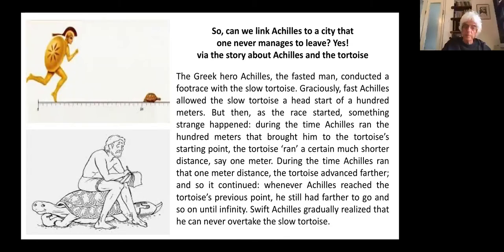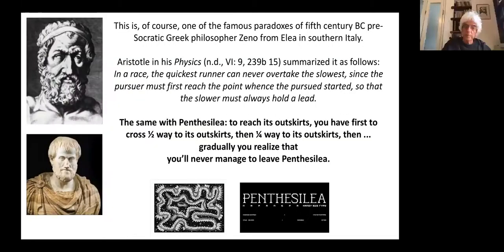This is, of course, one of the paradoxes of the Socratic philosopher Zeno from Elea. Aristotle, in Physics, summarized it as: 'In a race, the quickest cannot overtake the slowest, since the pursuer must first reach the point where the pursued started.' The same with Pentacillia — you have to cross halfway, then a quarter of the way, and gradually you realize you will never manage to leave Pentacillia.